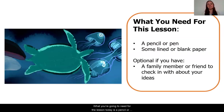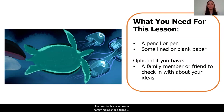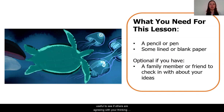What you're going to need for the lesson today is a pencil or pen, some lined or blank paper, or if you have the packet pages available to you for lesson three, you can get those out right now as well. Something that's optional but encouraged, just like every time we do this, is to have a family member or a friend that you can chat and check in with. We're going to be analyzing some evidence, so it will be really useful to see if others are agreeing with your thinking.